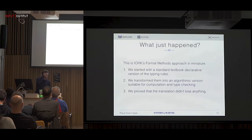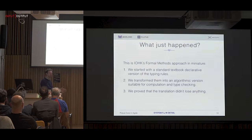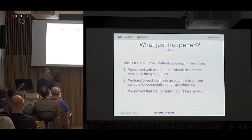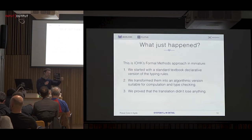Taking a step back: what did we just do? I would argue this is IOHK's formal methods approach in miniature — one step of it. We started with the standard textbook definition and converted it to a version that actually works algorithmically — we can implement a type checker using it — and we've proved that this step was valid with our soundness and completeness proofs.